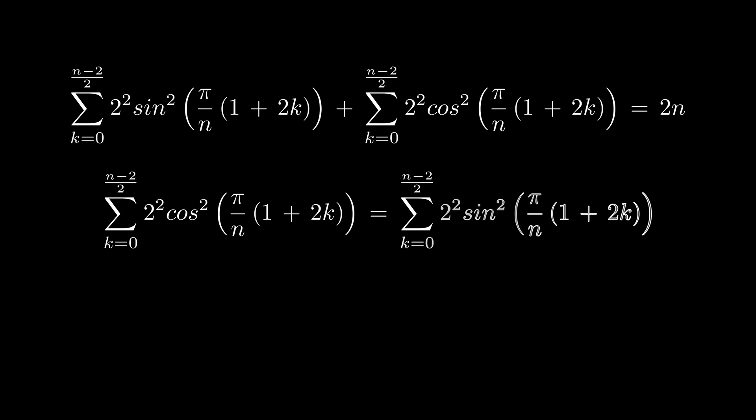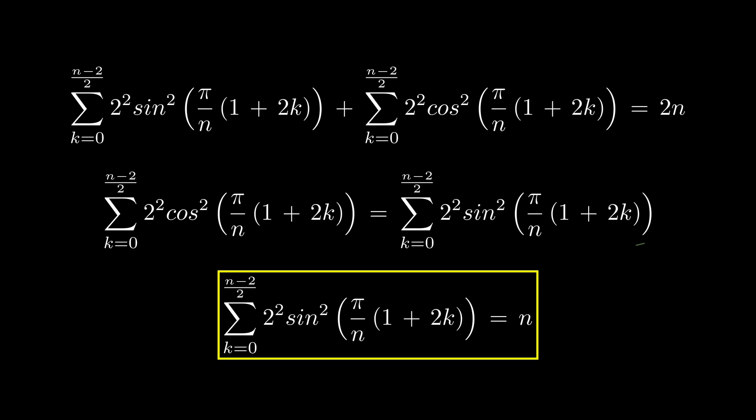That's a lot of work, but we're finally down to these two facts. Clearly, they imply the desired equality. The sum of squared vertical elements is always equal to n.